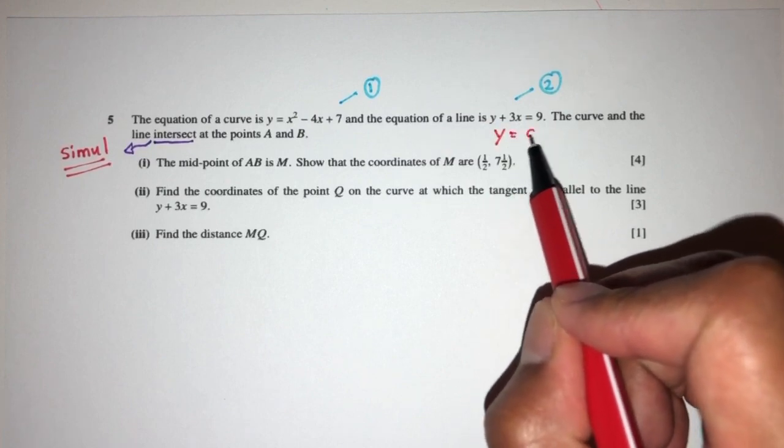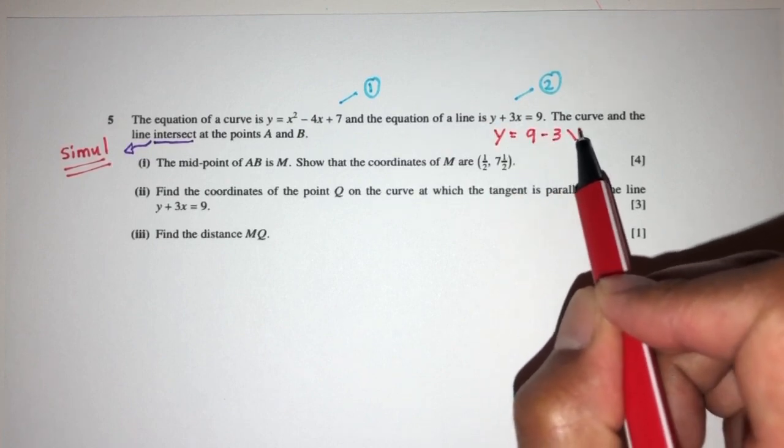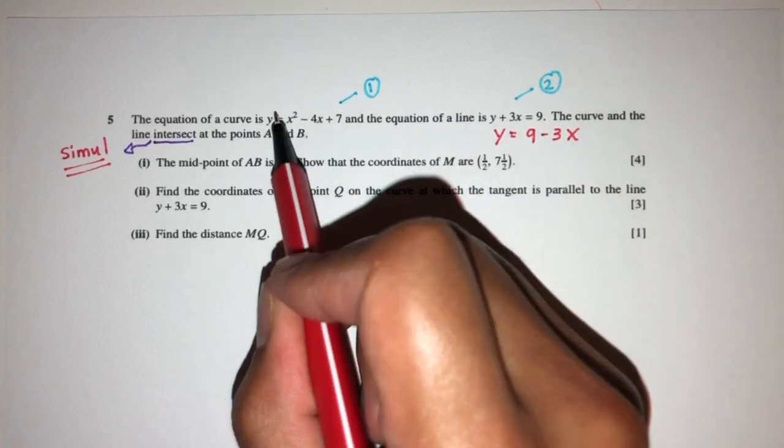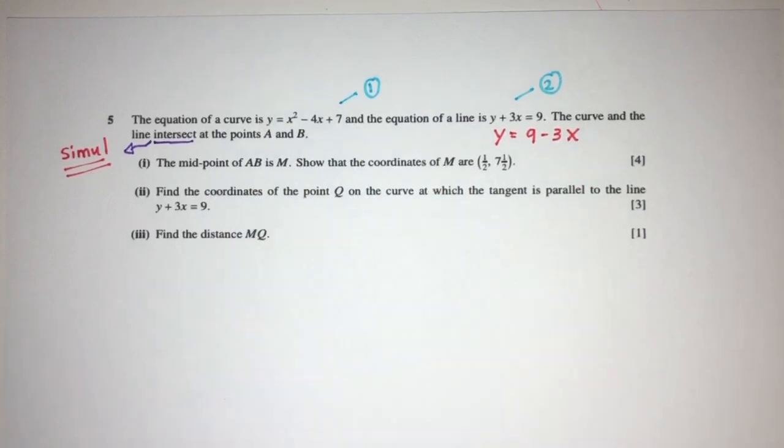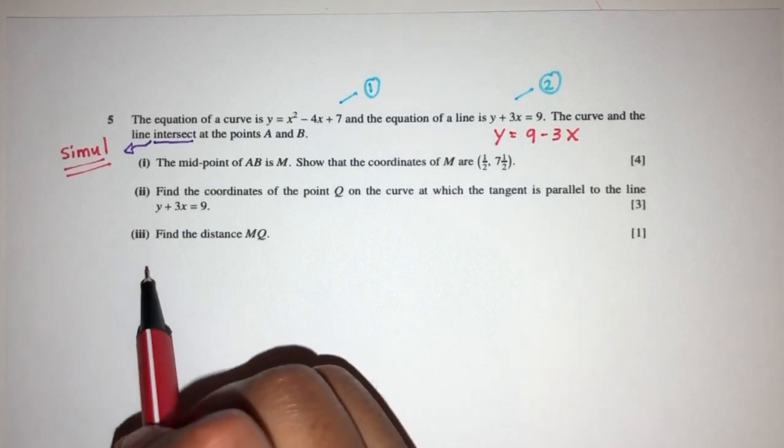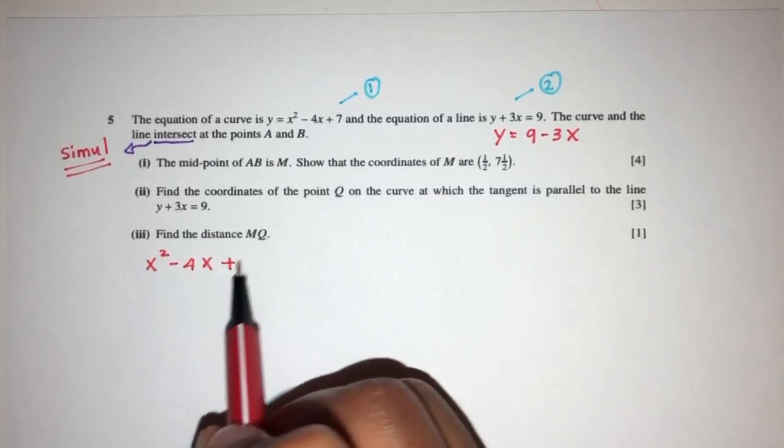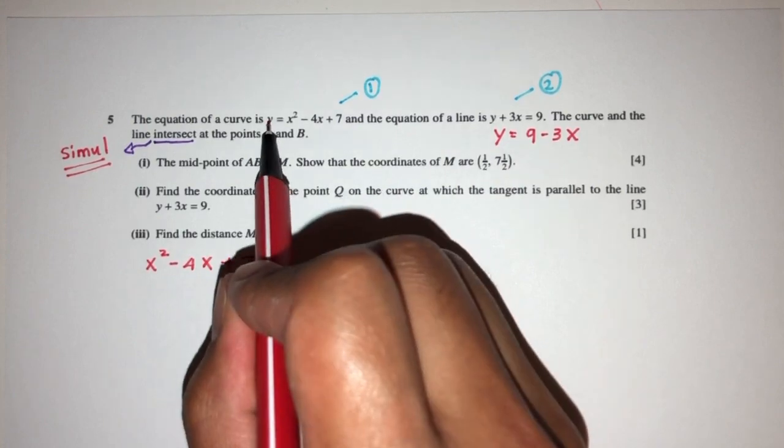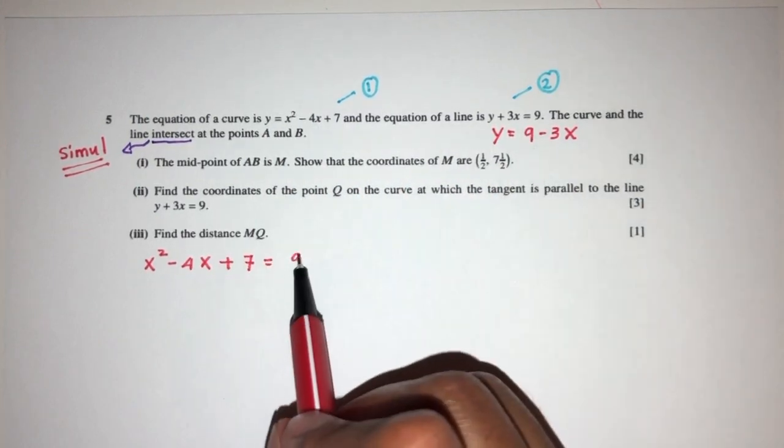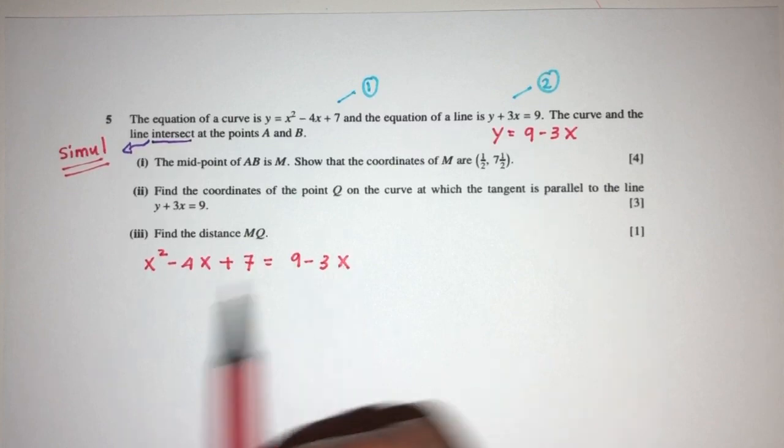Here you can see you can make y the subject pretty easily. So y will be 9 minus 3x. Now we have y here and y there, we can substitute each other. You will have x² - 4x + 7 equal to y, and y is also equal to 9 - 3x. So now we have this equation to solve.